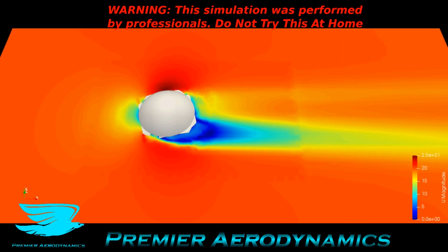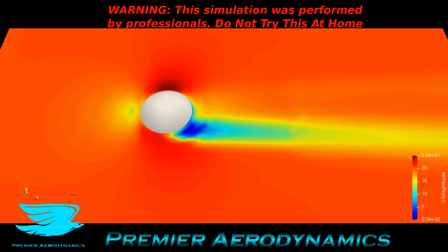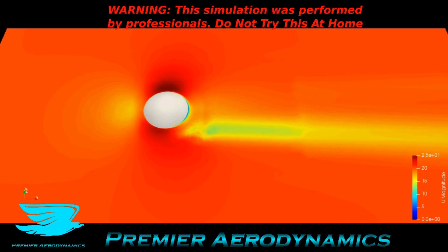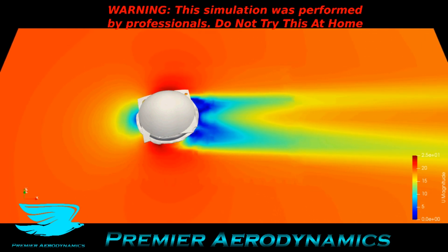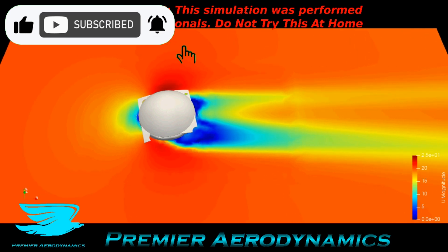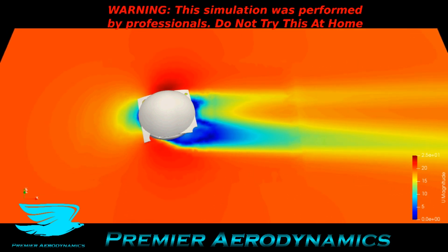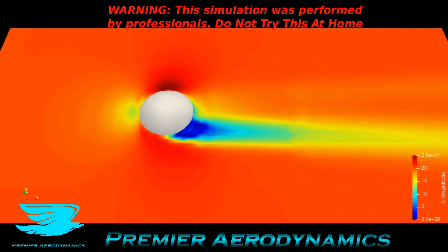This is the Z plane going from the bottom up, colored in the U magnitude going from 0 to 25 meters per second. You can see behind the burger there are these two maxima of wake, but the one on the bottom of the screen is much bigger than the one on the top, and it prevails much more up on the burger — I'm not sure what that is from.